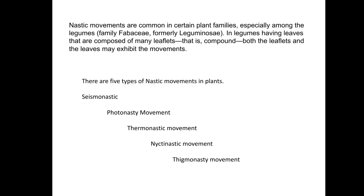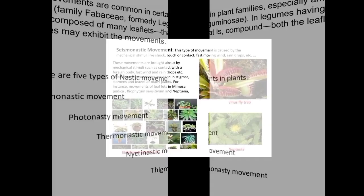Examples of nastic movements include: in Mimosa pudica, when we touch the leaves, they fold up — the stimulus is touch. In the dandelion flower, petals open in the morning in bright light and close in the evening when light fades — the stimulus is light. In nastic movement the stimulus is diffuse, meaning it does not affect the organ from any definite direction, unlike tropic movement. There are five types of nastic movements: sismonastic movement, photonastic movement, thermonastic movement, nyctinastic movement, and thigmonasty movement.